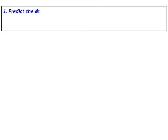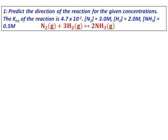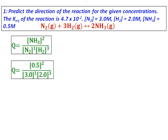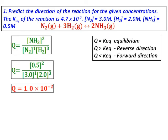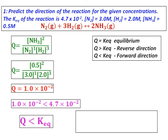We will do a question: predict the direction of the reaction for the given concentrations. K equilibrium is 4.7 × 10⁻². Concentration of nitrogen is 3 M, hydrogen is 2 M, ammonia is 0.5 M. The equation is nitrogen plus hydrogen giving ammonia. First write the expression for Q and substitute the concentration values. Q equals 1.02 × 10⁻². Comparing Q and K, Q is less than K equilibrium. Therefore the reaction will go in the forward direction — more ammonia will be formed.